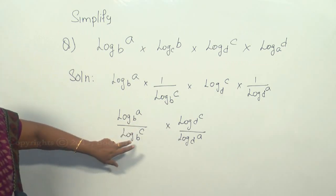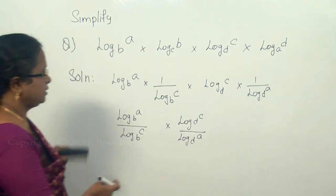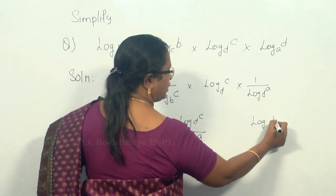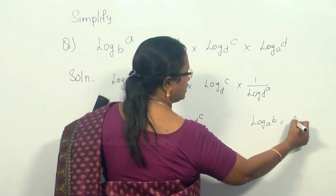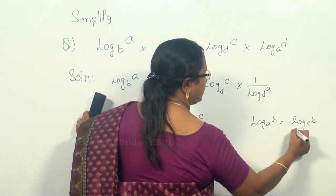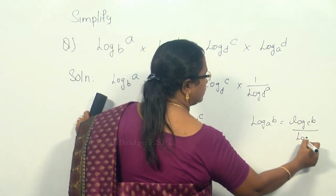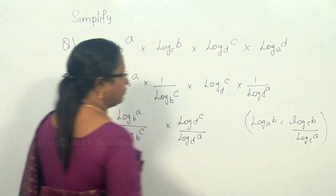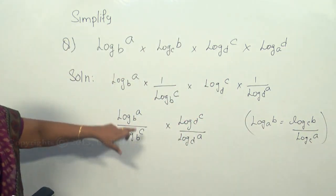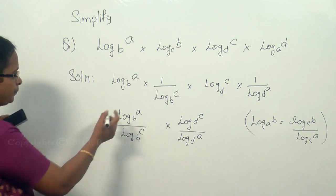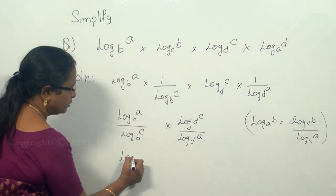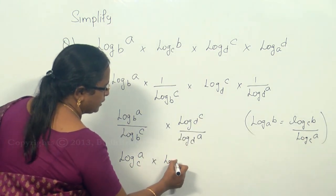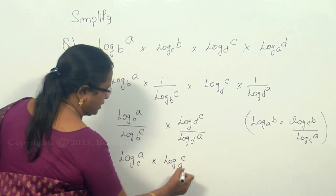The common base is used here. This is in the form where log b base a can be written as log b base c divided by log a base c. So this rule is applied here — the common base can be removed. So here it is going to be log a base c, and similarly d can be removed and you can say log c base a.